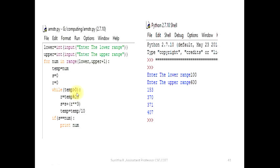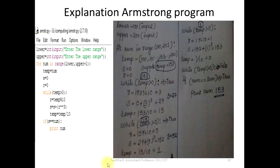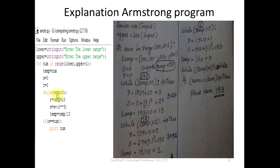For example, with lower range 100 and upper range 200, the first number checked is 100. We set temp equal to the current number, initialize s equal to 0, then enter the while loop. For number 153: 153 mod 10 gives remainder 3, which is the last digit.